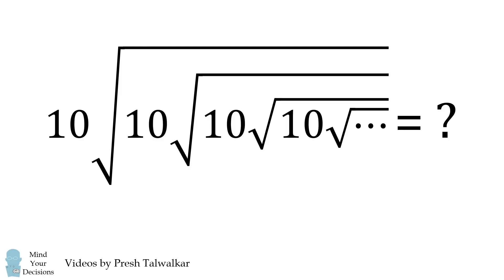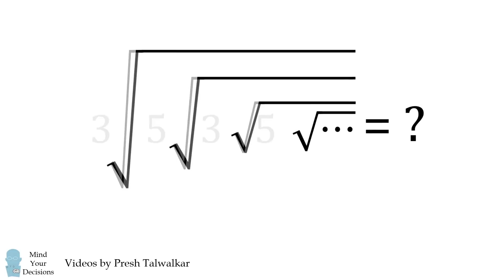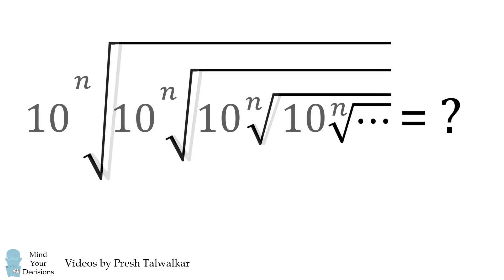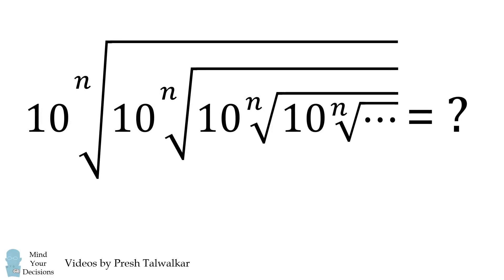If you can solve this problem, you can then consider the variation where instead of 10, we have an alternation of 3 and 5. Another variation is to consider we have 10 under each radical, but instead of just having a square root, we have an nth root — for n equal to whole number values like 2, 3, 4, 5, and so on.